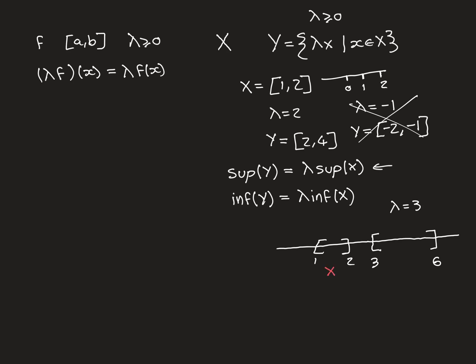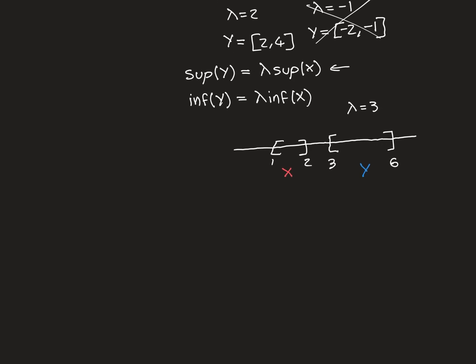Here is our set X, and here is our set Y — with lambda = 3, so 1×3 = 3 and 2×3 = 6, with everything in between sprawled over accordingly. We want to prove that the supremum of Y equals lambda times the supremum of X. To prove that number is the supremum, we need to prove that it's an upper bound for Y, and that it's the least upper bound.